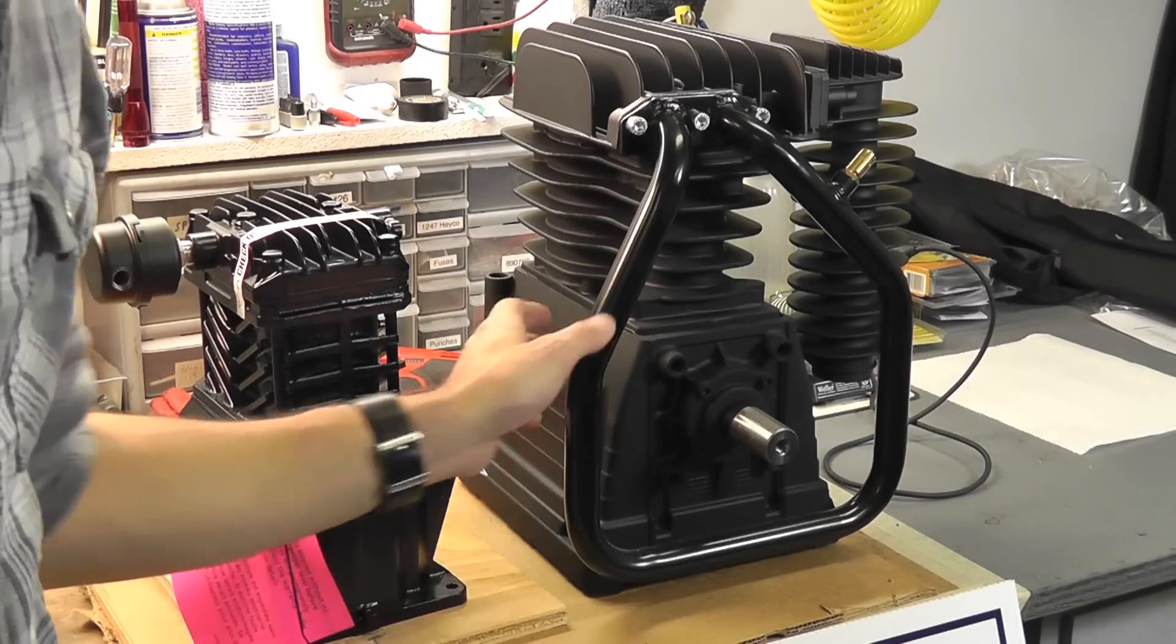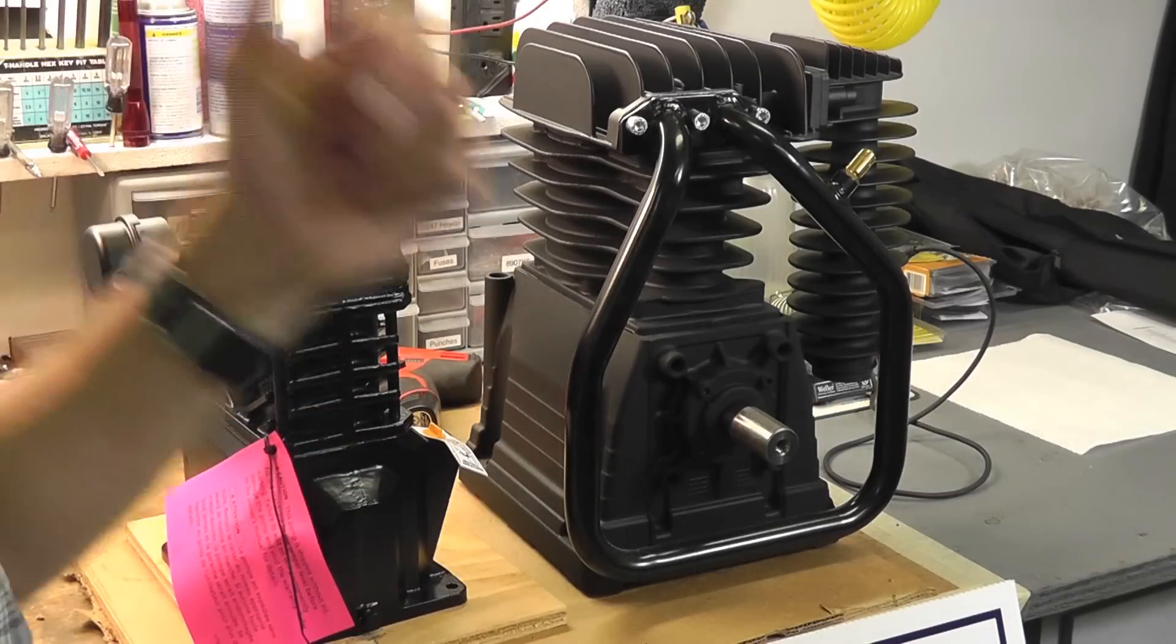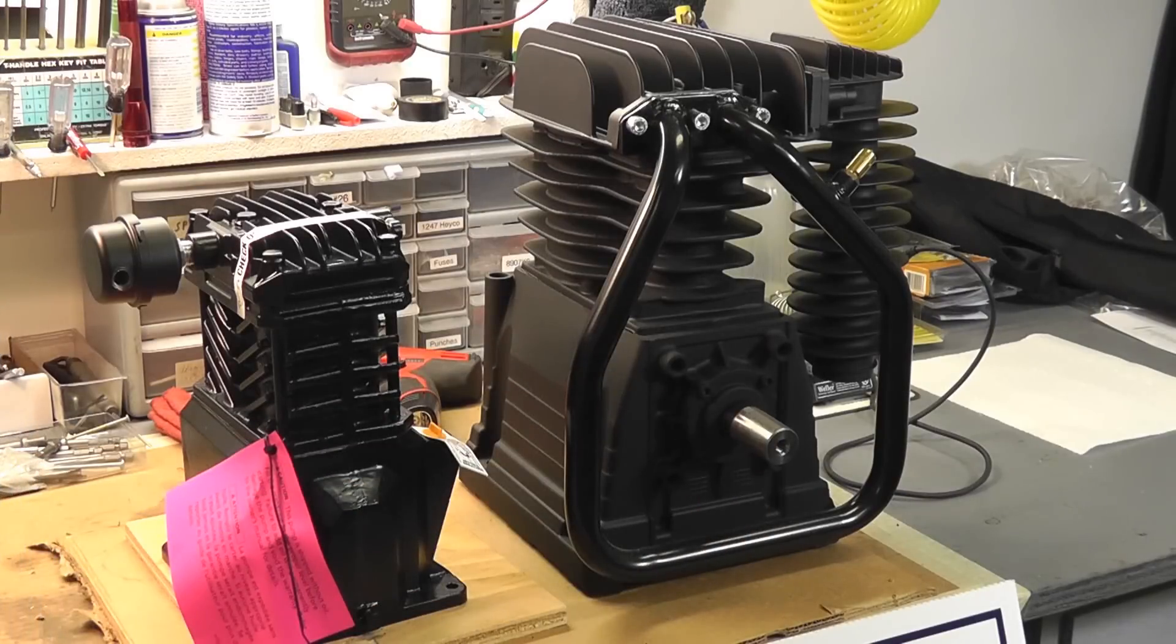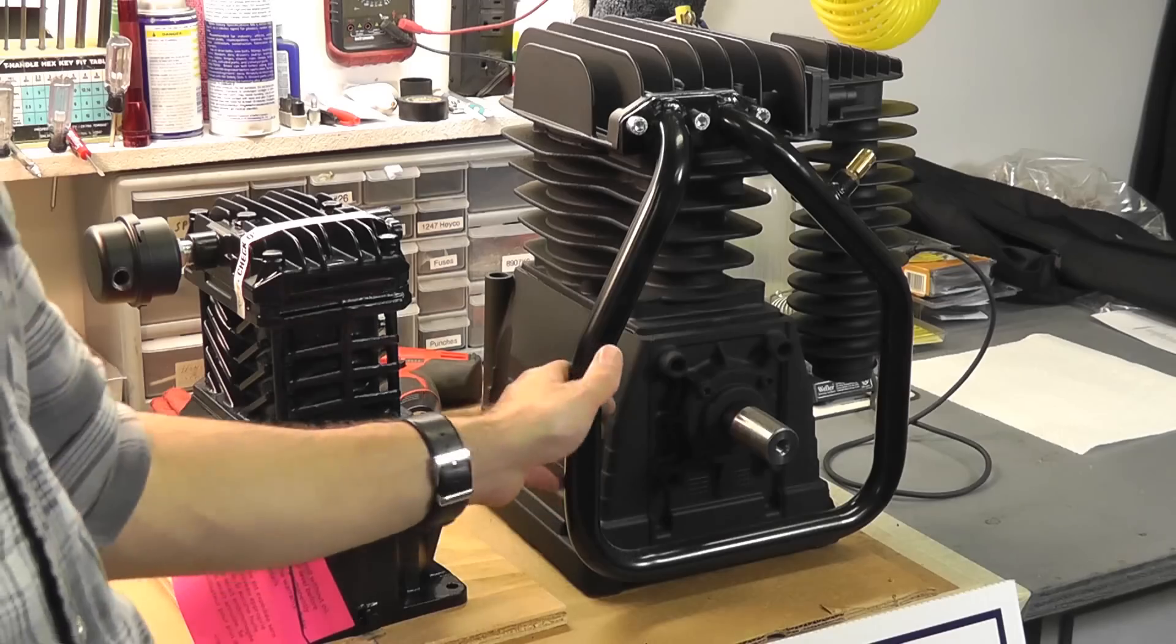Over here is a B5900 pump, used on many brands of units, from DeVilbis to Campbell Hustfeld, or Coleman Powermate, Husky, you name it. It's used on many different units.